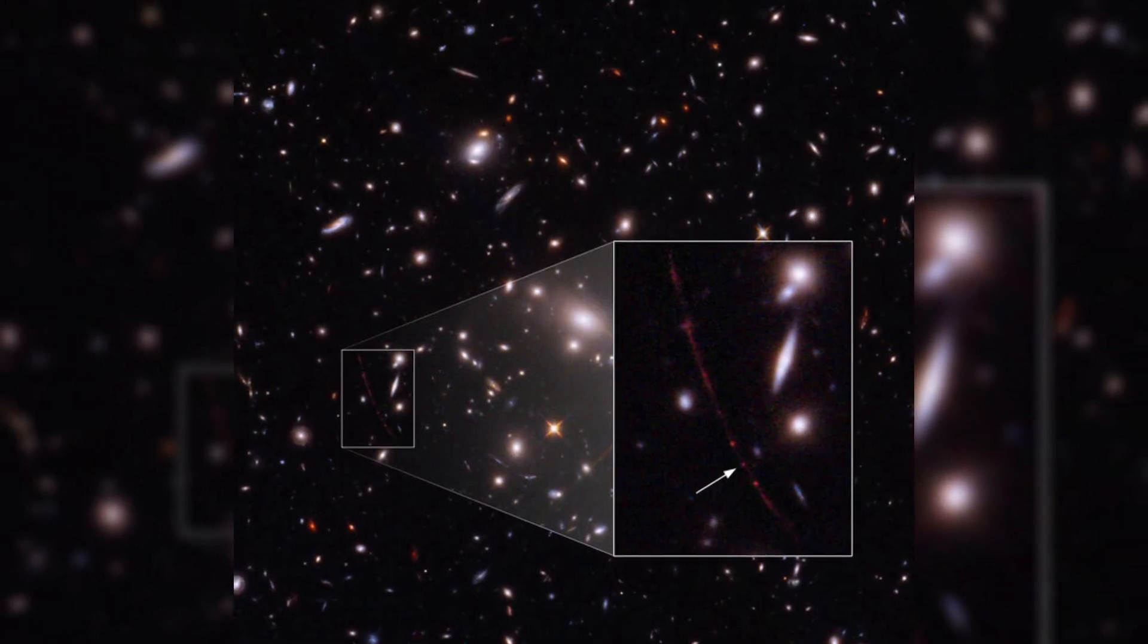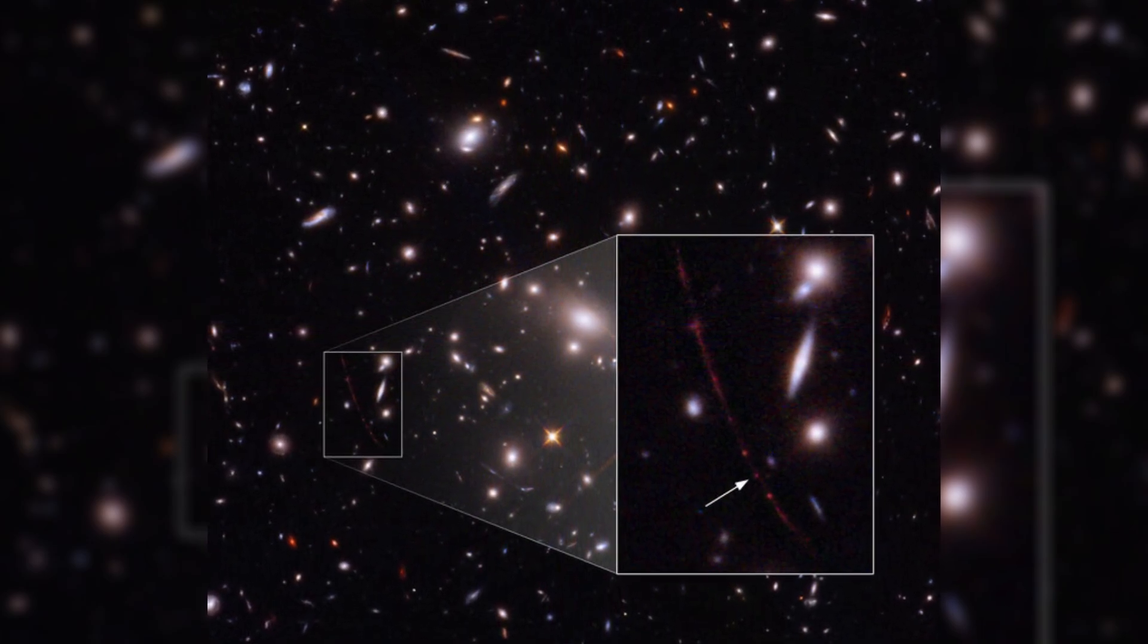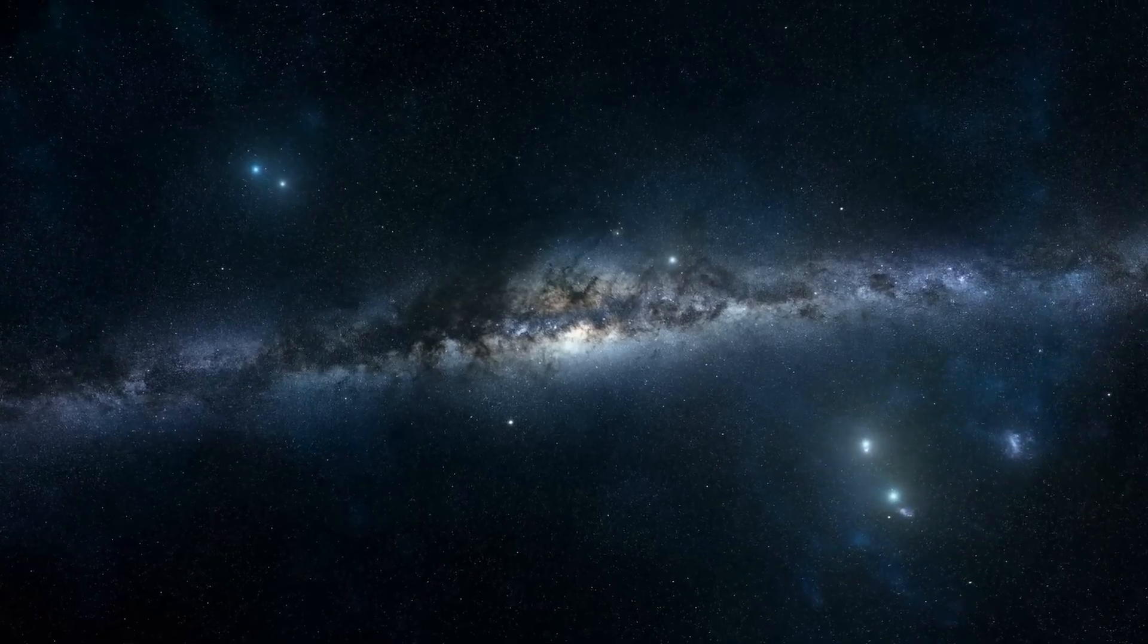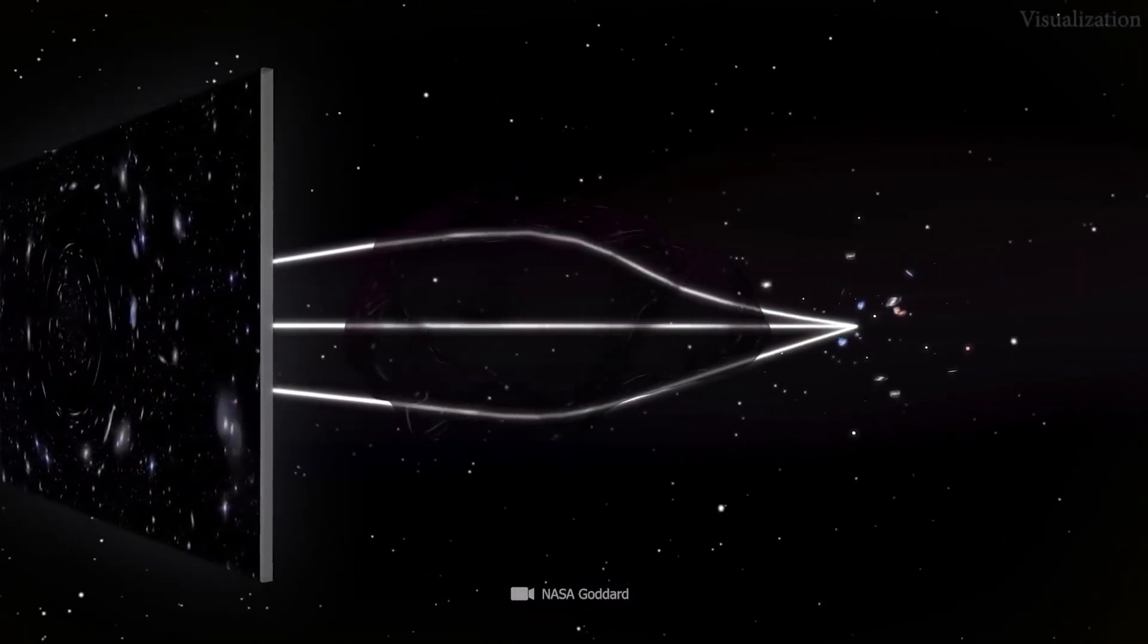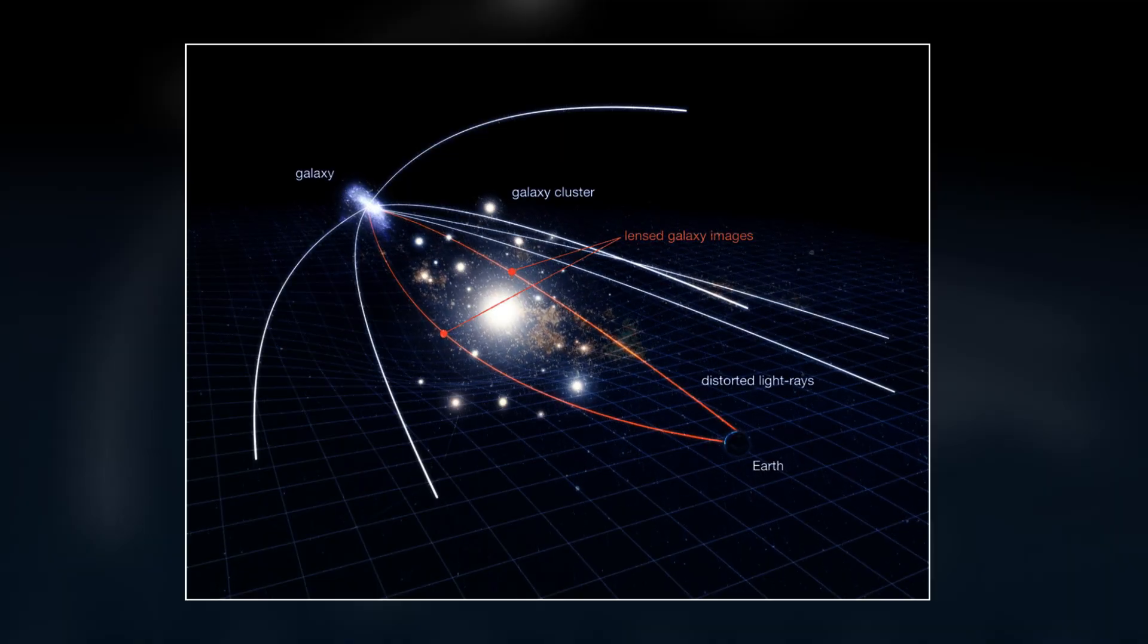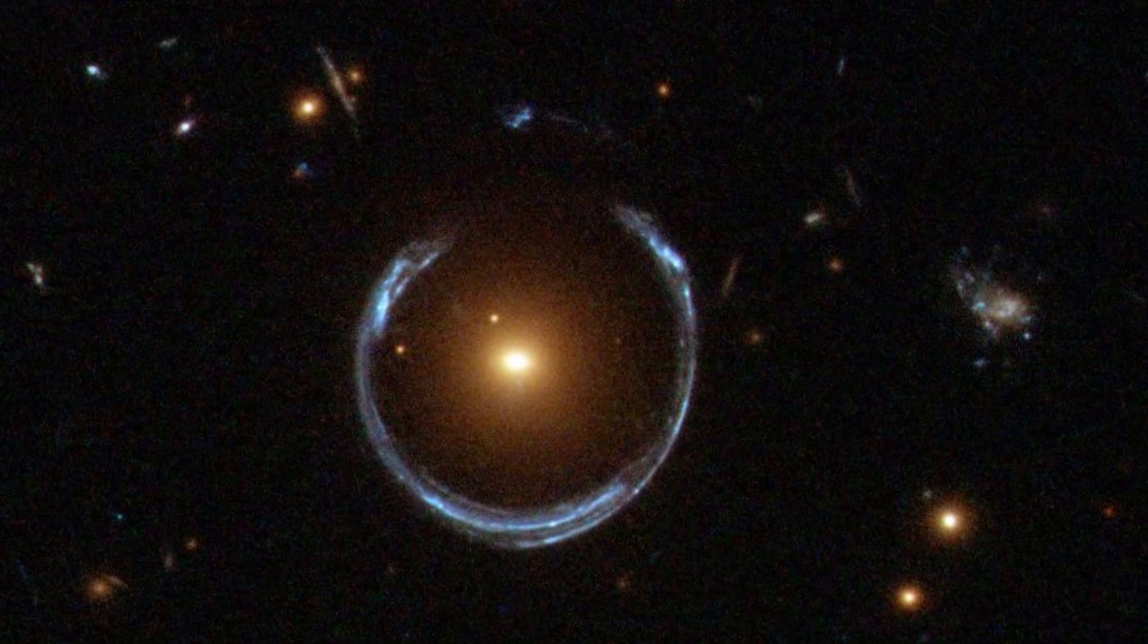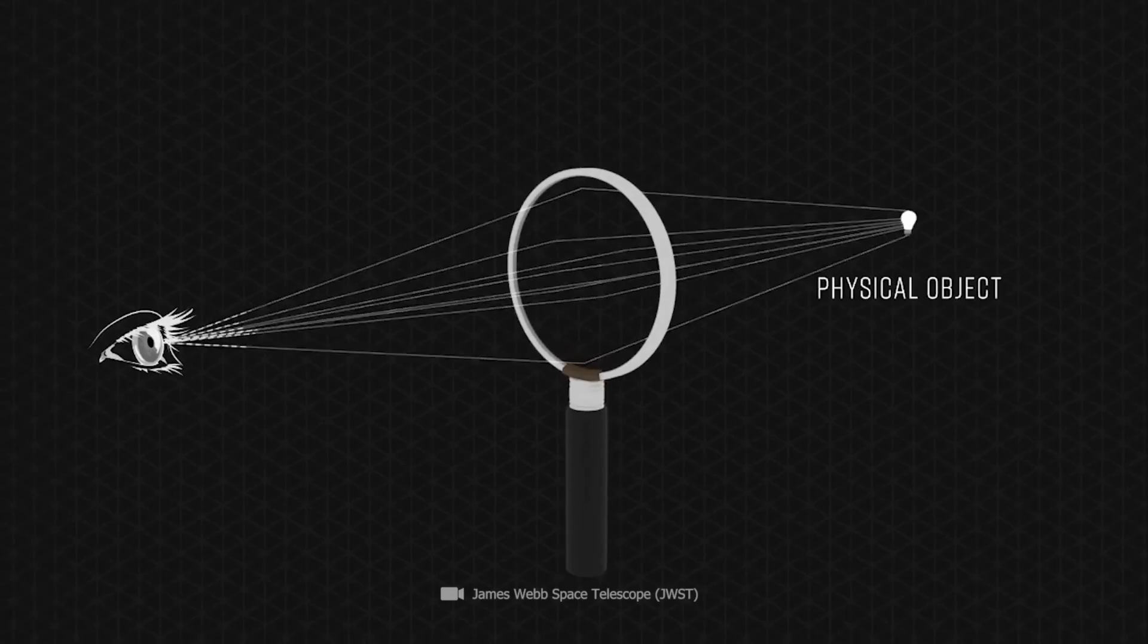The star of the dawn, WHL-0137LS, is among the earliest single stars ever found. It was only notable because the gravitational lensing effect greatly enlarged it. When an extremely large object, such a galaxy or even a black hole, induces a curvature in the upstream space-time, the gravitational lensing effect always results.